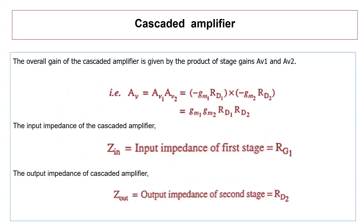The gain of the first stage is minus GM1 times RD1, and the gain of the second stage is minus GM2 times RD2. The input impedance of the cascaded amplifier at the first stage is equal to RG1, since the input is given to the gate terminal of the first stage. The output impedance is taken from the drain of the second stage, which is RD2.